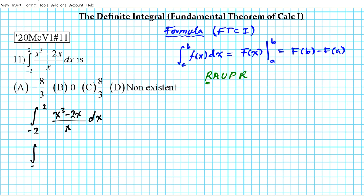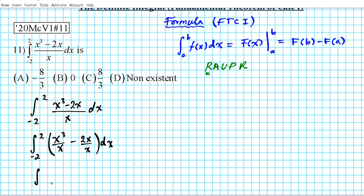All right, so we have the integral from negative 2 to 2 of x to the third over x minus 2x over x. All righty, so we're going to find that integral with respect to x. So let's simplify that.